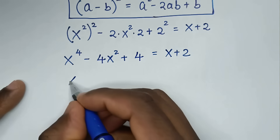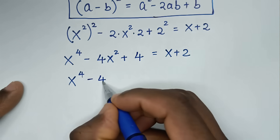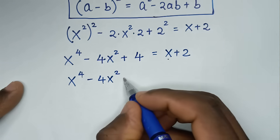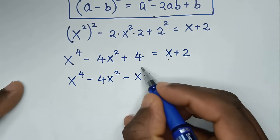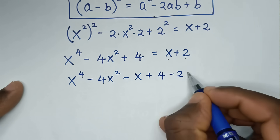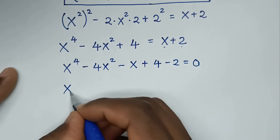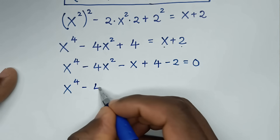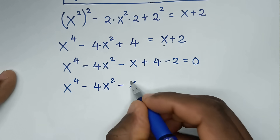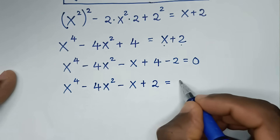Then it will be x⁴ minus 4x², then x we take to this side to be minus x, then plus 4, and 2 we take to this side to be minus 2, is equal to 0. So it will be x⁴ minus 4x² minus x plus 4 minus 2, which is 2, is equal to 0.